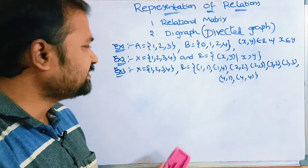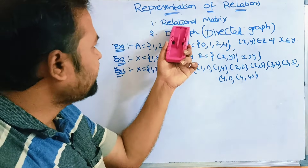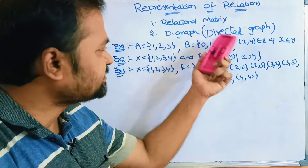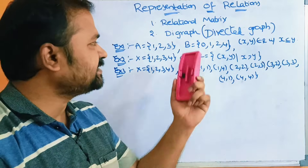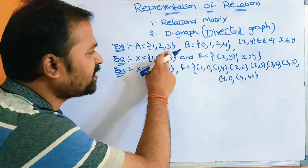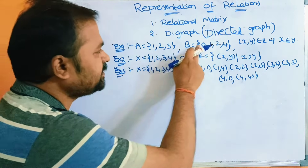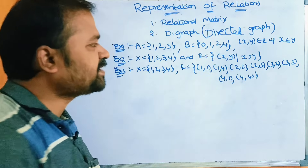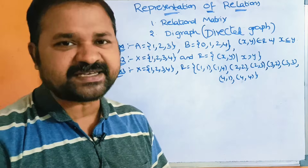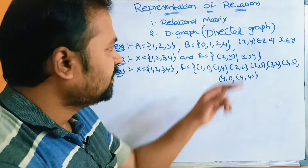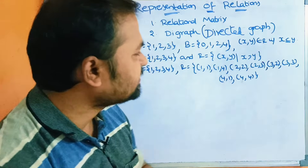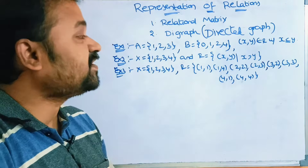Let us solve two examples using the relational matrix as well as by representing in graph format. Let A equal {1, 2, 3} and B equal {0, 1, 2, 4}. Two sets are given. Here XY belongs to R if X is less than or equal to Y.